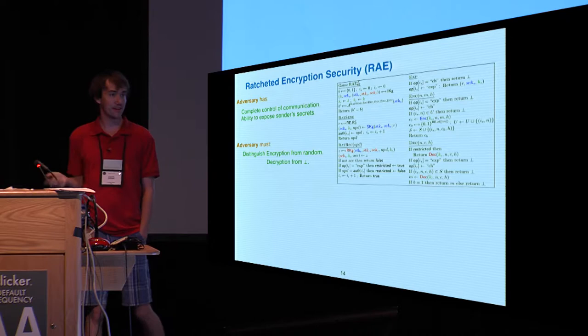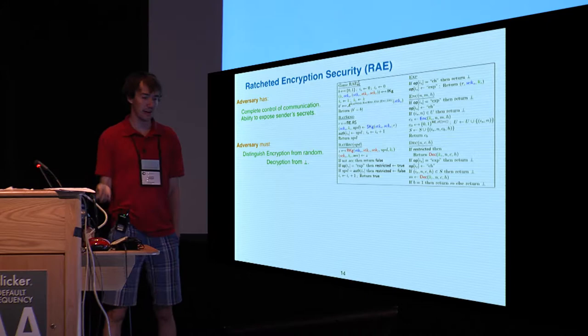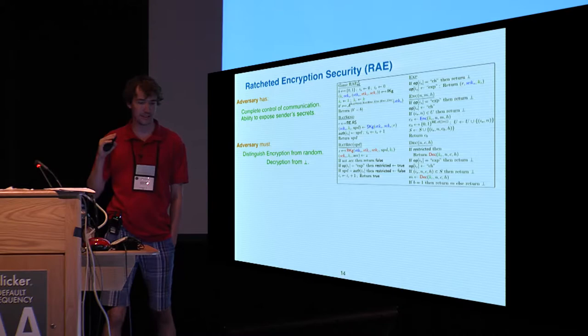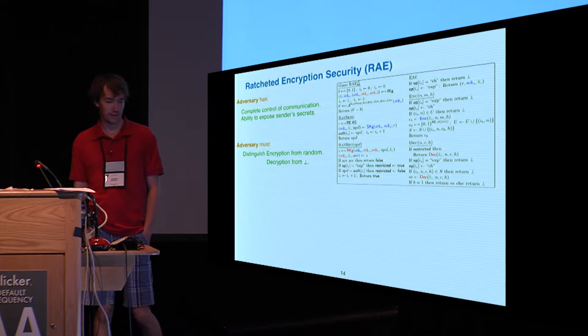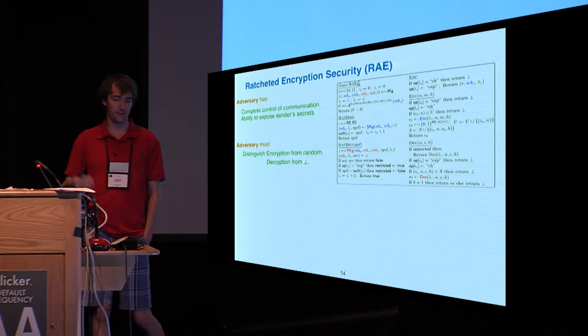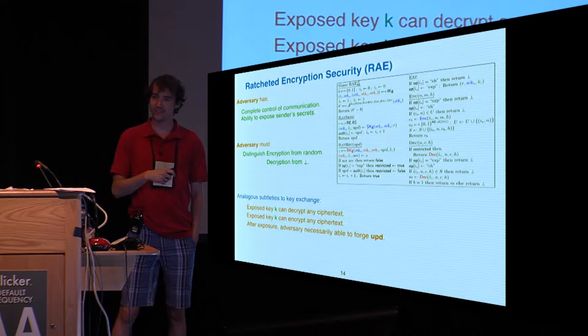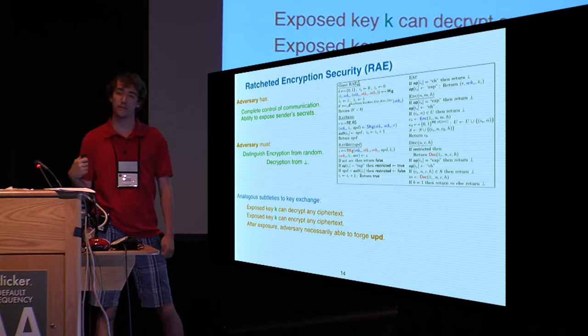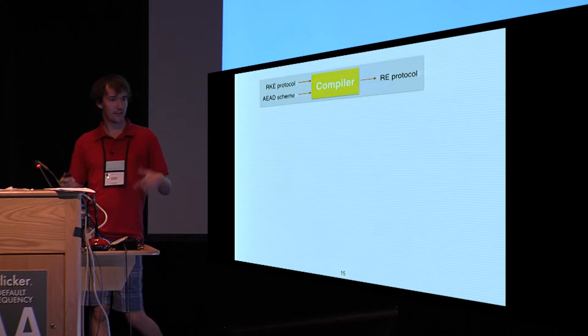Again, we have a security game. Again, the adversary has complete control of the communication between the parties and is allowed to expose the sender's secret at any time. The difference comes in what the adversary is trying to do to win. Now, instead of distinguishing keys from random, it has access to both encryption and decryption oracles. It tries to distinguish between the valid output of encryption and random strings of the appropriate length, or it tries to distinguish between the output of decryption and an oracle which just always rejects. As before, there are various subtleties dealing with when the adversary exposes, not allowing it to do trivial attacks. And we address them using similar techniques to the prior definition.